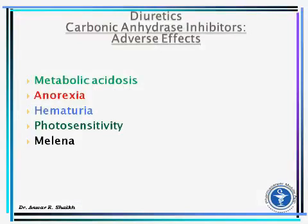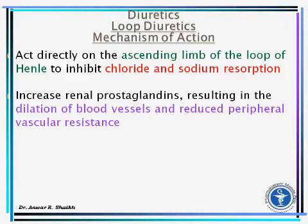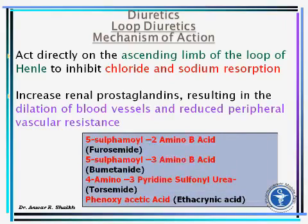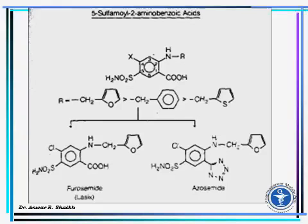Side effects of carbonic anhydrase inhibitors include metabolic acidosis, anorexia, hematuria, photosensitivity, and melena. Site 2 — loop diuretics or high ceiling diuretics act directly on the ascending limb of the loop of Henle to inhibit chloride and sodium reabsorption, and increase renal prostaglandins resulting in dilation of blood vessels and reduced peripheral vascular resistance. Drugs include bumetanide, torsemide, and ethacrynic acid. Drug effects include potent diuresis and subsequent loss of fluid; decreased fluid volume causes reduced blood pressure, reduced pulmonary vascular resistance, reduced systemic vascular resistance, and reduced central venous pressure.